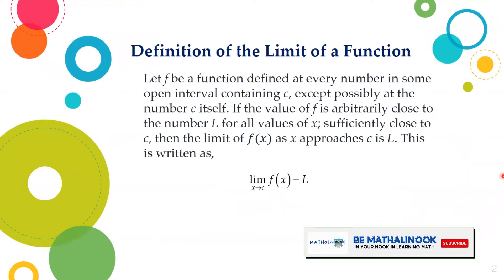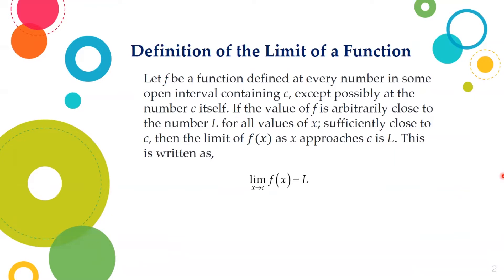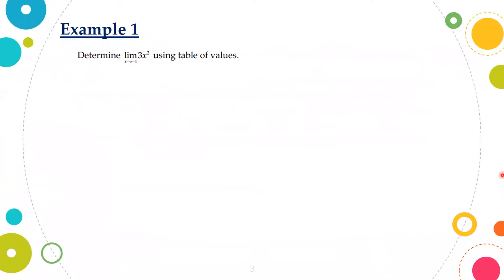Let f be a function defined at every number in some open interval containing c, except possibly at the number c itself. If the value of f is arbitrarily close to the number L for all values of x sufficiently close to c, then the limit of f(x) as x approaches c is L. This is written as: limit of f(x) as x approaches c equals L. To illustrate this definition, let us take this example.